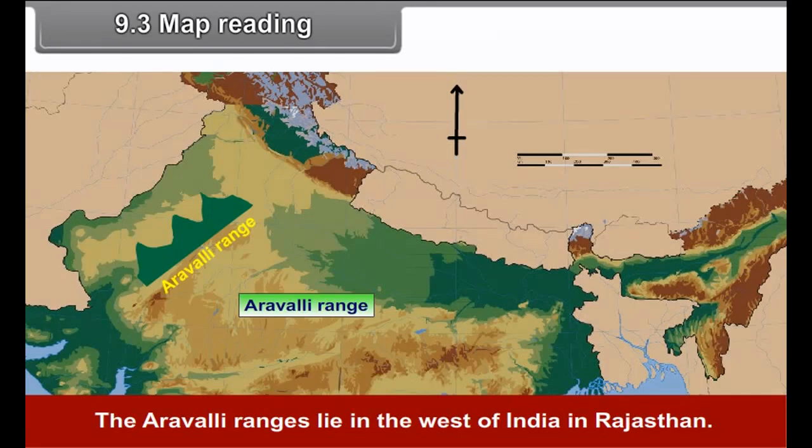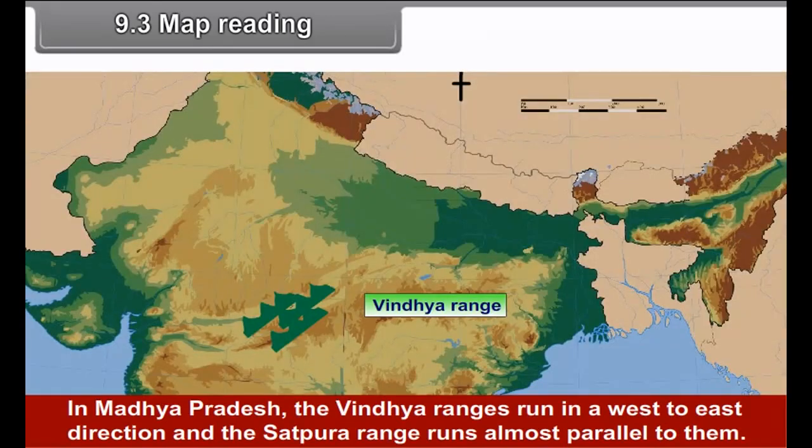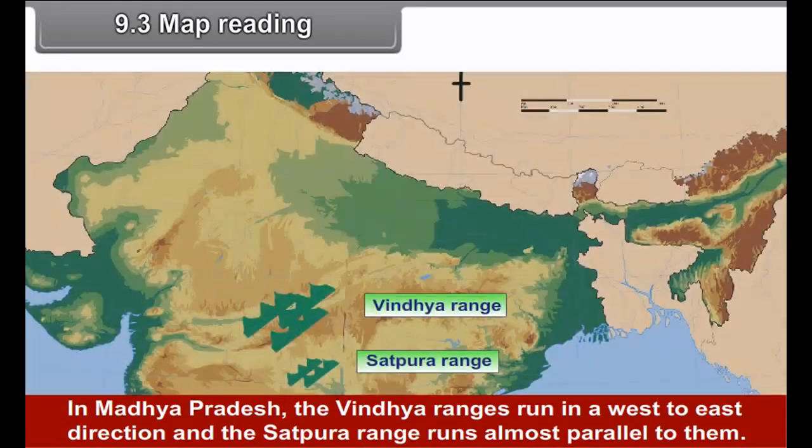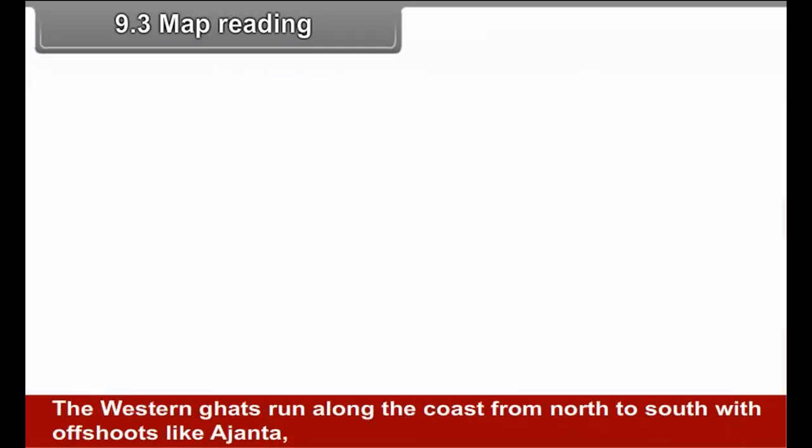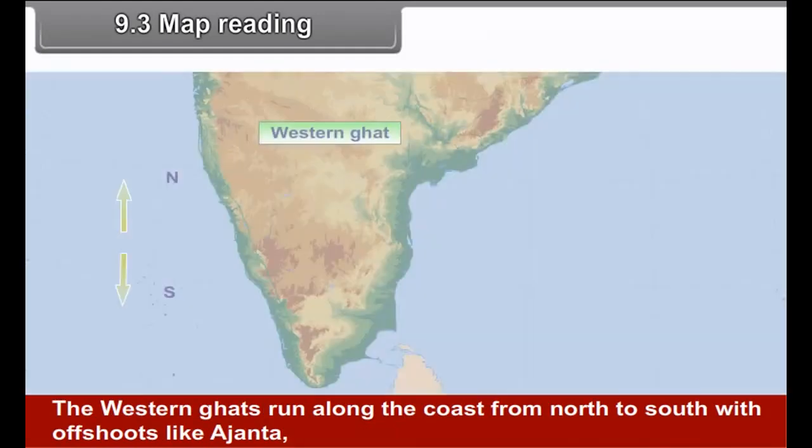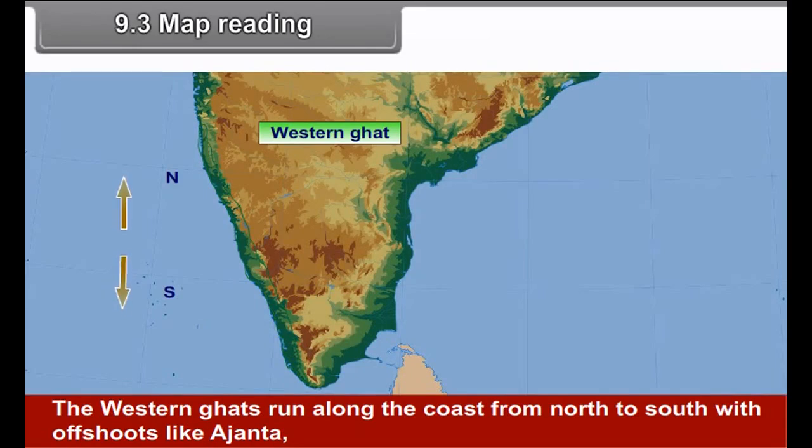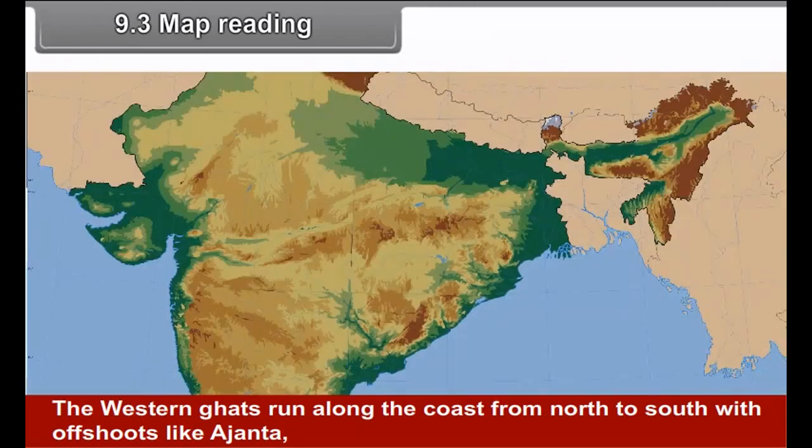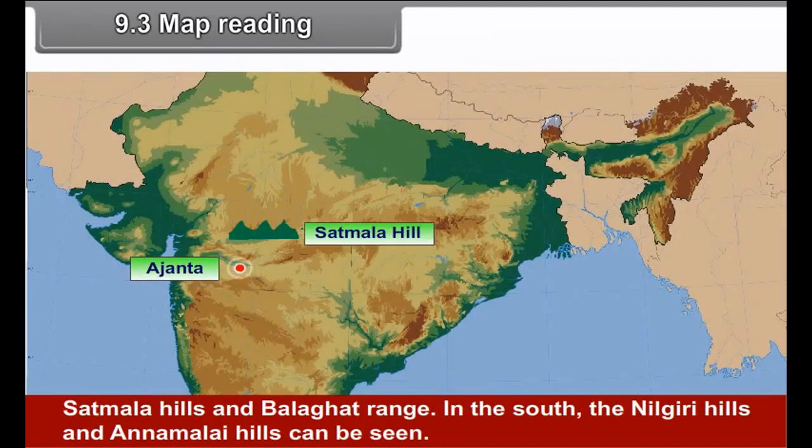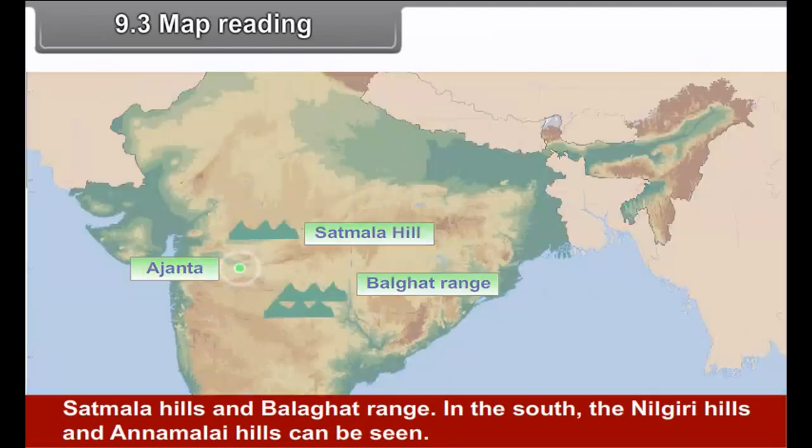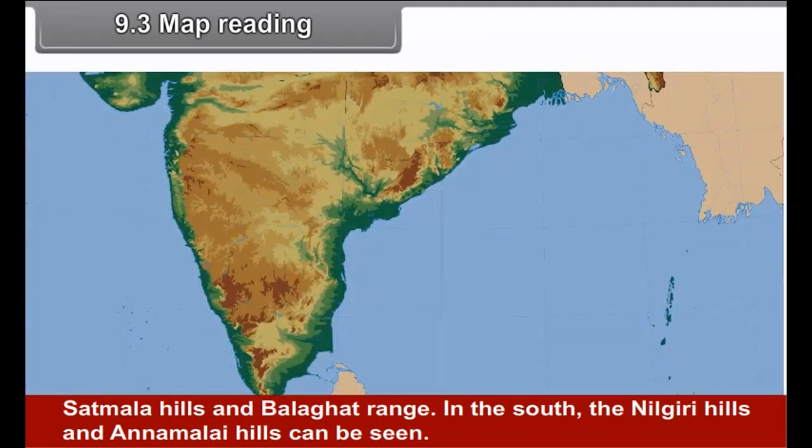9.3 Map reading. Let us explain each map separately. A. Physical Map of India. To the north of India, the Himalayas with a height of more than 6,000 meters above mean sea level can be seen. There are some hill ranges to the northeast of India. The Aravali range lies in the west of India in Rajasthan.